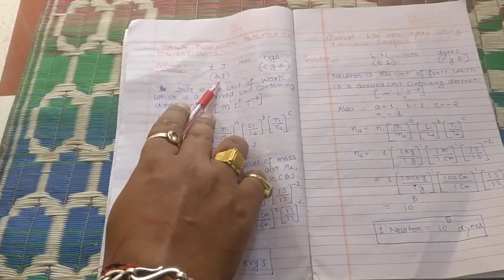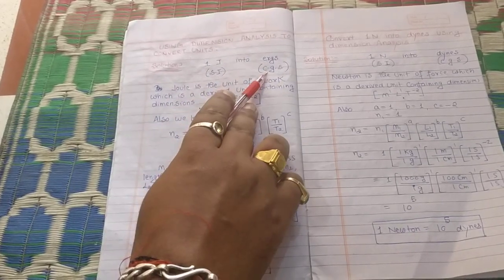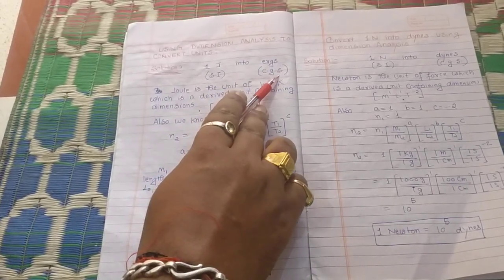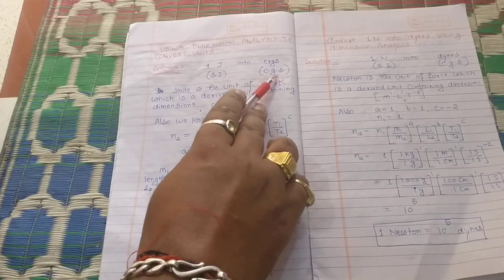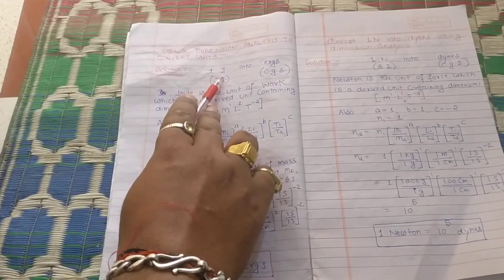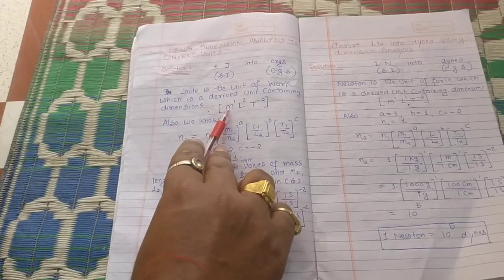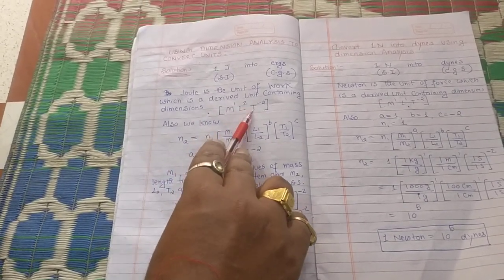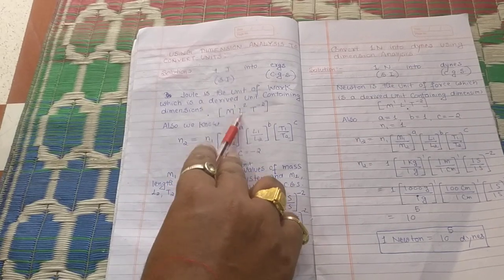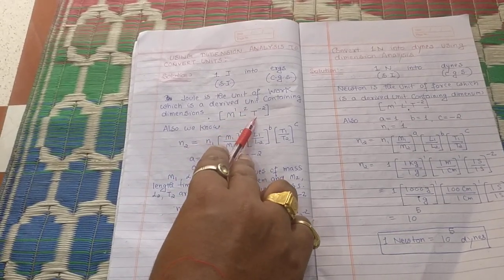Joule is the SI unit of work and erg is the CGS unit of work. So how many ergs are there in one joule? We know that the dimension of work is ML²T⁻².